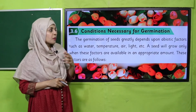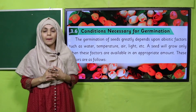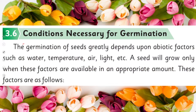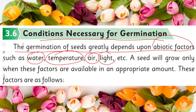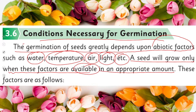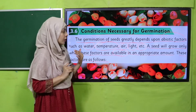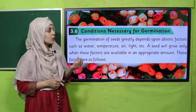My dear students, today we will discuss conditions necessary for germination. Please open your Science Five books. Conditions necessary for germination: the germination of seeds greatly depends upon abiotic factors such as water, temperature, air, light, etc. A seed will grow only when these factors are available in an appropriate amount. A seed germinates when all these abiotic, non-living factors — water, temperature, air, and light — are present in the right amount. Let's discuss them one by one.